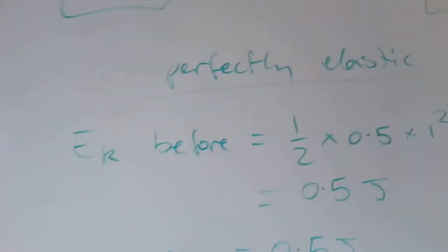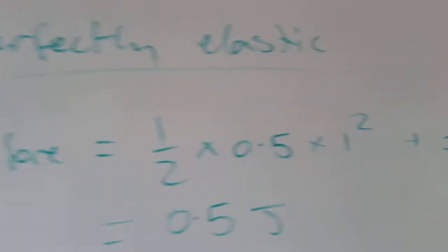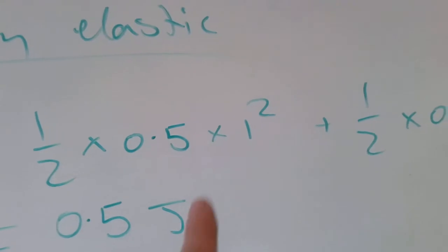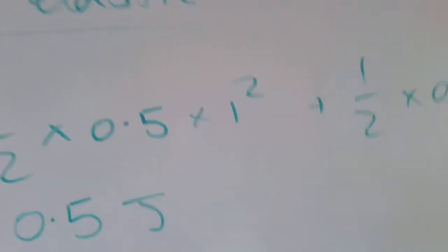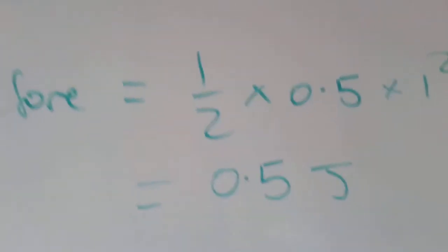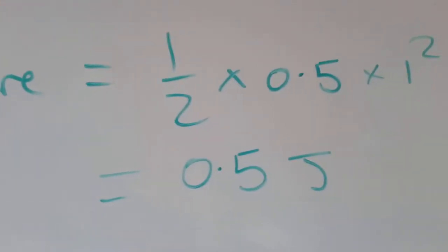If we do that, the kinetic energy before is going to be half times the mass of the first one times the velocity of the first one squared, and then exactly the same thing for the second one because they're identical. So if you add those up together, I think it adds up to half a joule of kinetic energy. That's the energy before the collision.